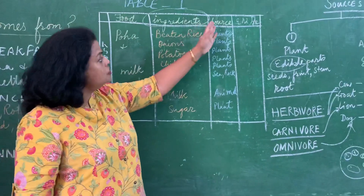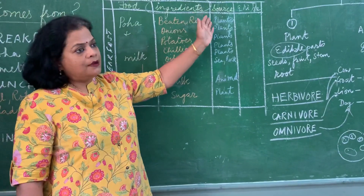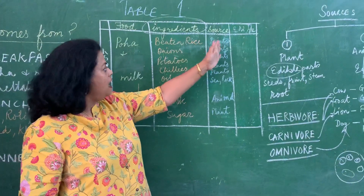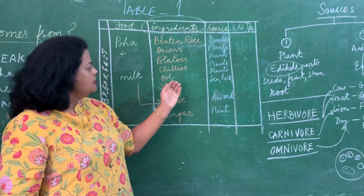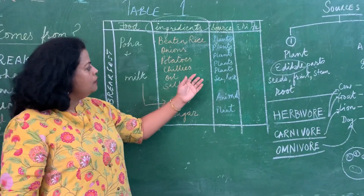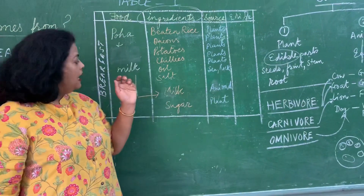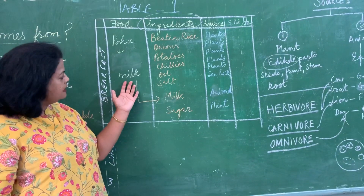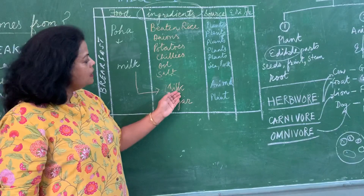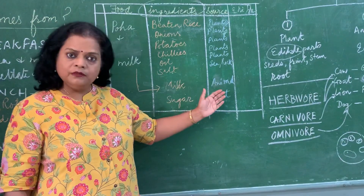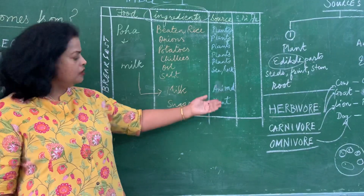So let's find the source for beaten rice — obviously it comes as a grain and it comes from plants. Onions, potatoes, chilies, salt — coming from plants. Similarly, oil — if you are getting it from plants — and salt from seed or the rock. Now let's take the second dish, milk and sugar. So milk is coming from animals. And sugar — sugar comes from plants.